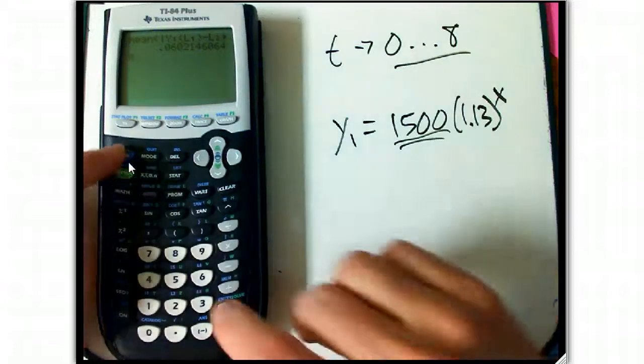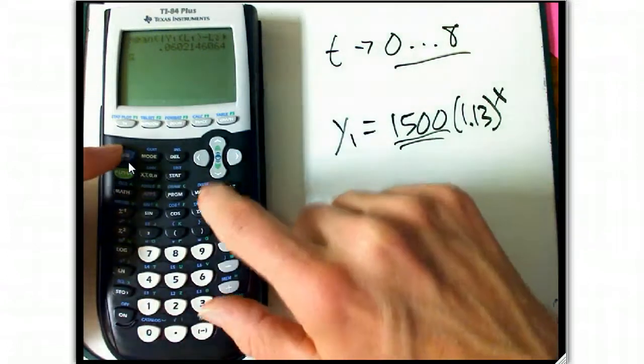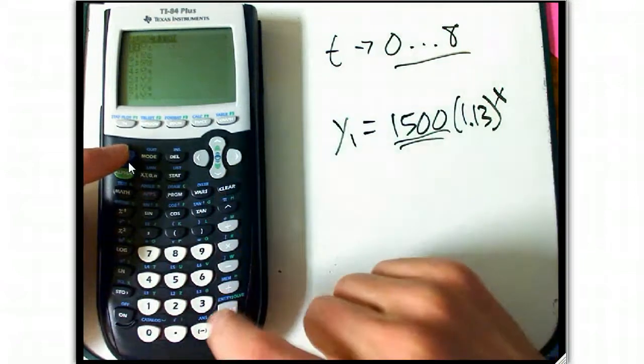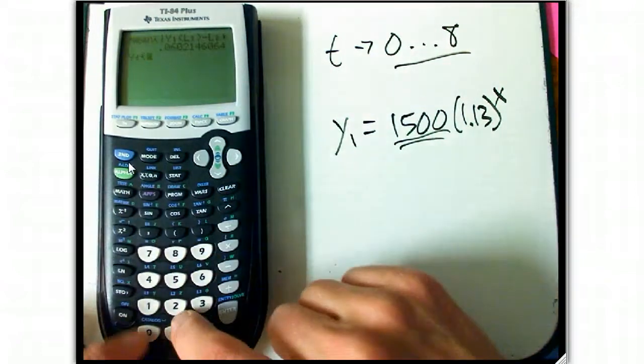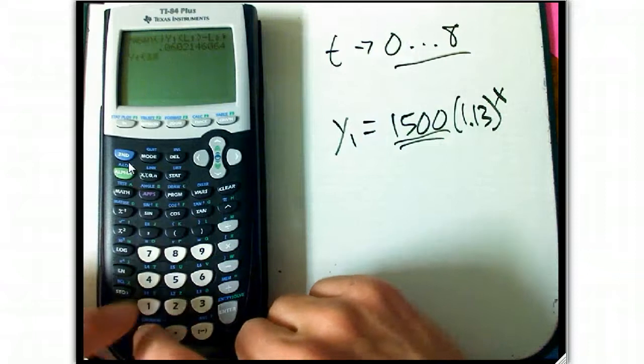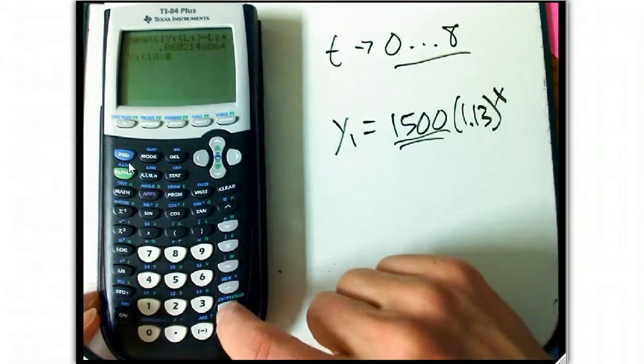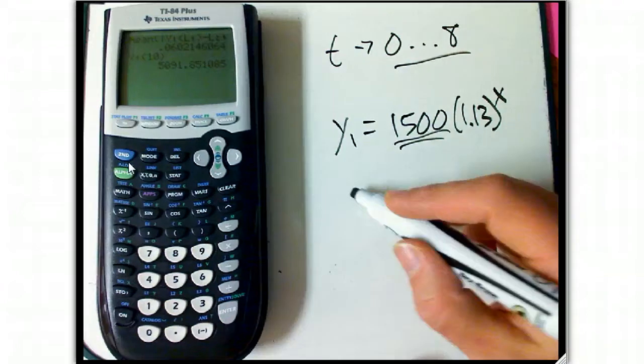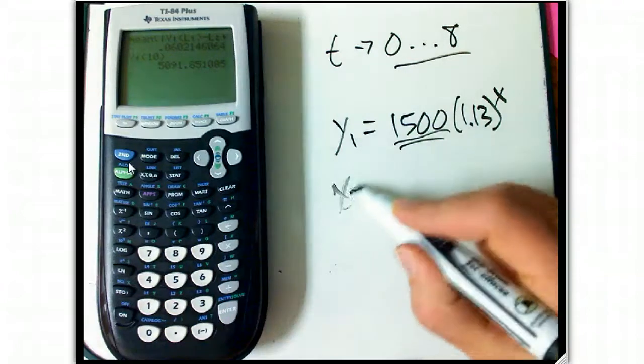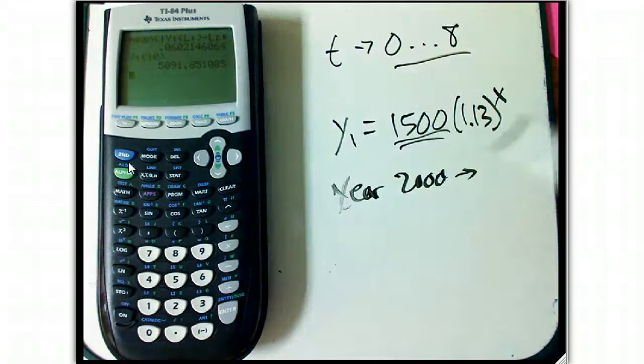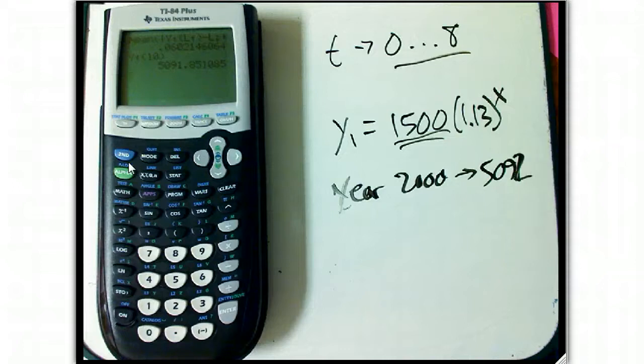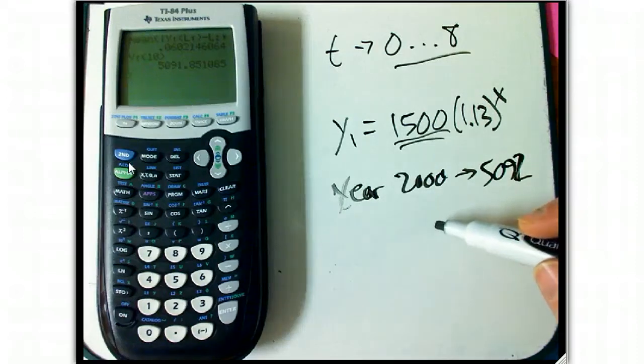So what can we do with that? Well, we can go ahead and try to predict things. So we can do vars, yvars, Y1 of, let's say, 10 decades after year 1900. So we've got, in the year 2000, the prediction of this model is there's going to be 5,091 million people, about 5 billion people, or actually about 5.1 if we round it. Well, the actual number is rather bigger. It's actually 6,060.